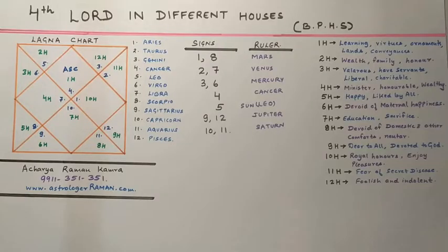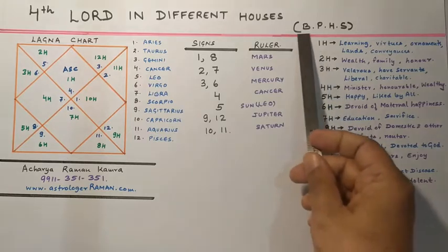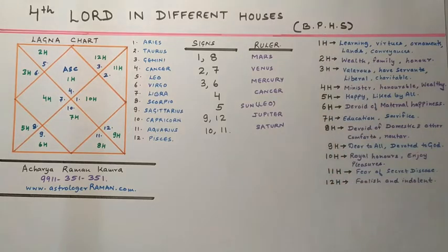Hello friends, this is Acharya Raman, Vedic Astrologer since last 20 years. Today we will do the results of lords of different houses according to the most authoritative scripture on Vedic Astrology, which is Parasara, or we can say Brihat Parasara Hora Shastra. We will do it in a very simple and easy way which even a person who is not very much familiar with Vedic Astrology would understand quite easily.